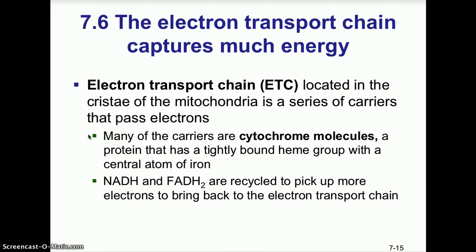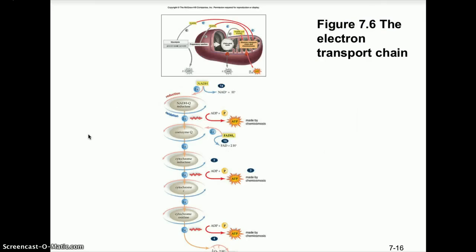Many of the carriers are cytochrome molecules, which are proteins that have a tightly bound heme group with a central atom of iron. The NADH and FADH2 molecules are recycled to pick up more electrons to bring back to the electron transport chain. You can see those cytochrome complexes gaining and losing electrons throughout. This biochemical pathway, like photosynthesis, is a series of oxidation-reduction reactions. It is the electron transport chain which establishes that hydrogen ion concentration gradient used in chemiosmosis for the production of ATP, which are the high-energy molecules of our cell.